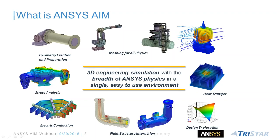One of the key capabilities of ANSYS products is the ability to couple multi-physics environments, rather than buying different software for different physics solving. AIM also includes design exploration to evaluate design alternatives and create better designs before releasing a product. Within AIM there is a SpaceClaim engine working behind the scenes where you can edit geometry, apply parameters, and see the effect of changing design parameters on analysis outputs like temperature, stress, fluid flow, mass flow rate, and velocity.